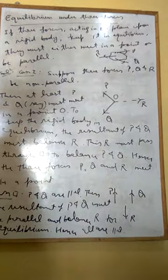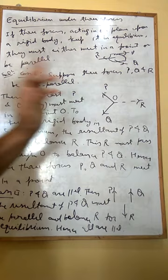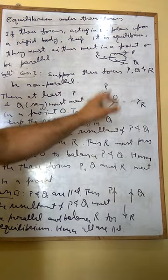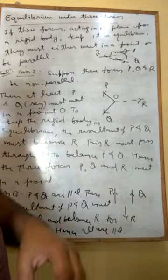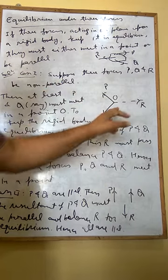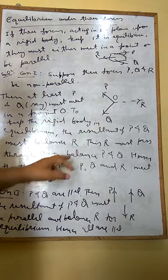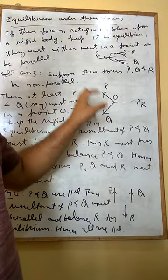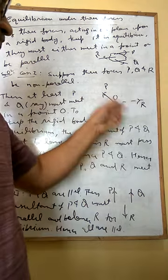Look at case one. Suppose three forces P, Q, and R are non-parallel. Then any two of them must meet in a point. Suppose P and Q meet at a point O. Since the body is in equilibrium, the two forces P and Q must be balanced by some other force. Hence the resultant of P and Q is balanced by the third force R, which must pass through O. Hence the three forces P, Q, and R meet in a point O. Case one is proved.